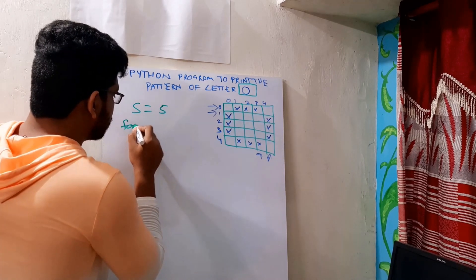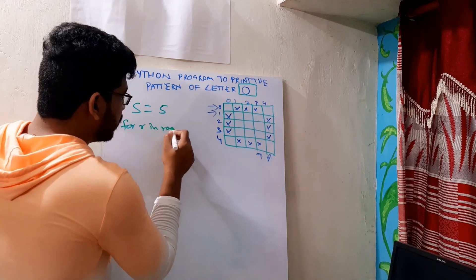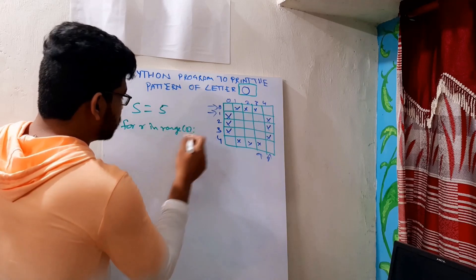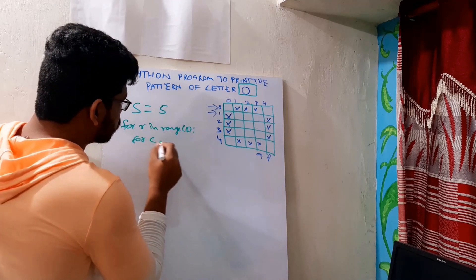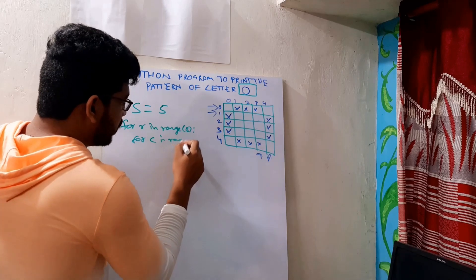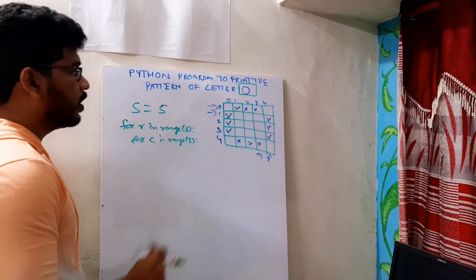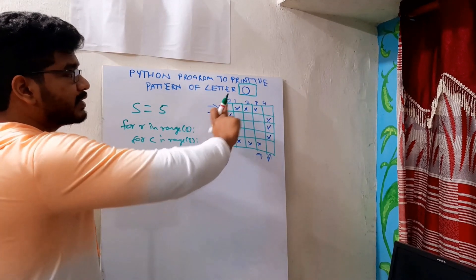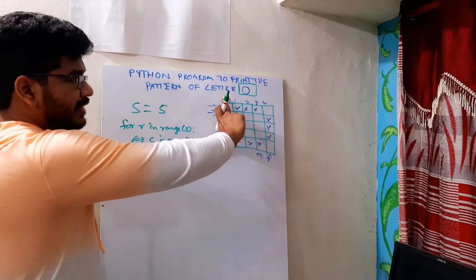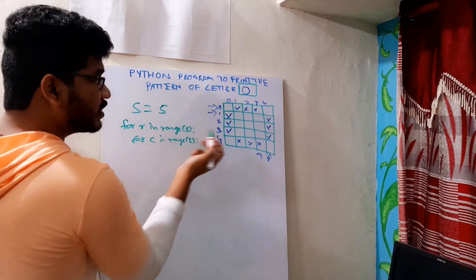For R — R means rows — in range of S. For C — C means columns — in range of S. For rows and columns I have done. So now to print stars in the first row, last row, first column, and last column, let's write conditions for that.